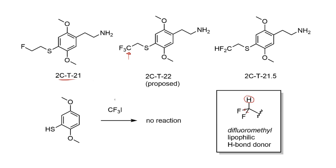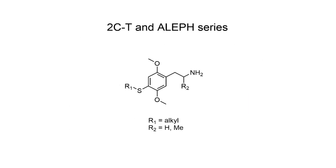Shulgin also mentions an attempt to prepare the trifluoromethylthio version by reacting the thiophenol starting material with gaseous iodotrifluoromethane. Introduction of fluorine isn't straightforward, and this was no exception — it turned out to be no reaction. There's a whole subfield of chemistry around how to introduce CF3 groups. And so that's the end of the tour of the thioether series. All of this information comes from book 2 of PIHKAL, and there are lots of interesting chemical bits and pieces throughout — you're always likely to find something interesting in the extensions and commentary sections.